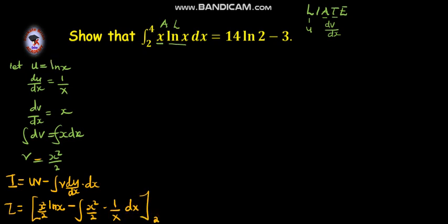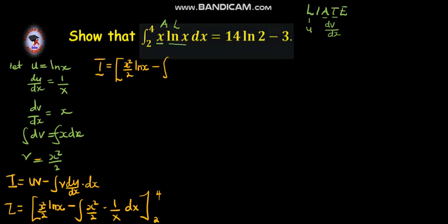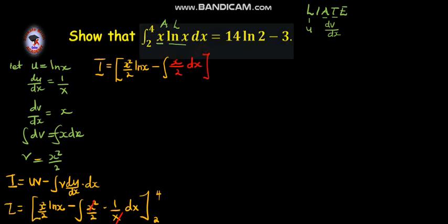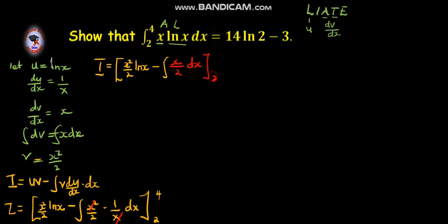But they give us the limit from 2 up to 4. So, I will be equal to x squared over 2 ln x, minus the integral. This x will cancel with this x. So, we shall have x over 2 with respect to x. And the limits range from 2 up to 4.